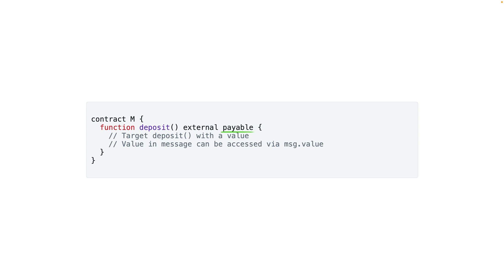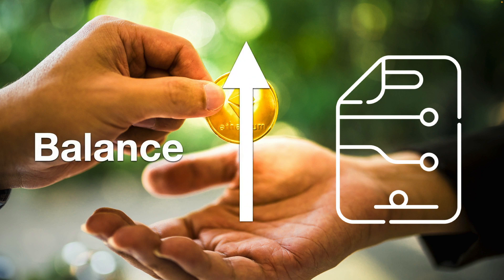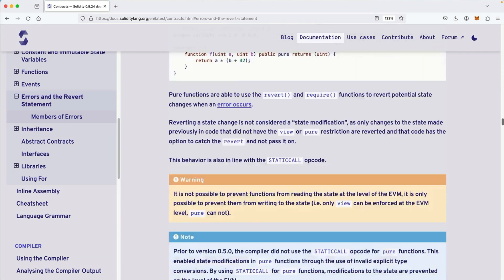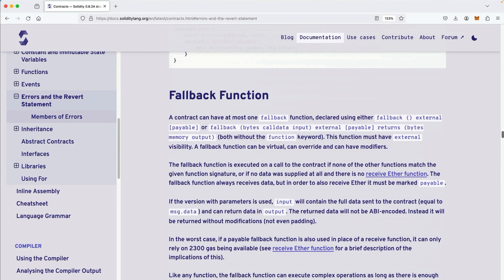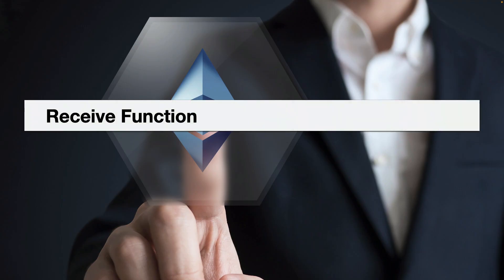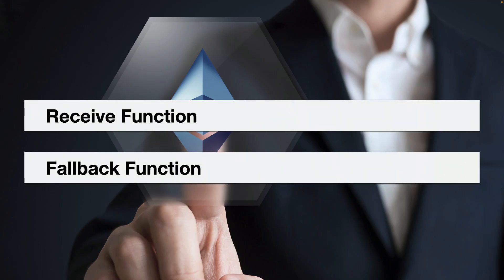If you call a function denoted as payable on a contract, the balance for that contract goes up — a contract can hold a balance just like a wallet can. There are also a couple of other special functions: the receive function and the fallback function, which you can program into your contracts to enable them to receive ETH. These two special functions only exist in Solidity and are designed specifically to handle the transferring of ETH to a contract.